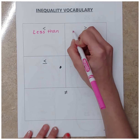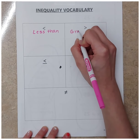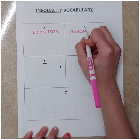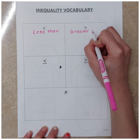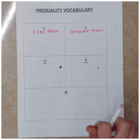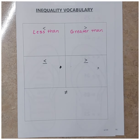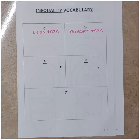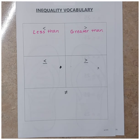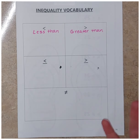And we have the greater than symbol. We can already tell by the fact that we have less than and greater than that they're going to be opposites. So a lot of the words we're going to use are also going to end up being opposites.